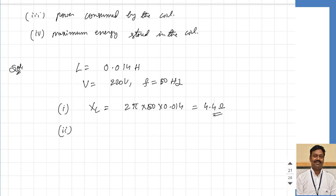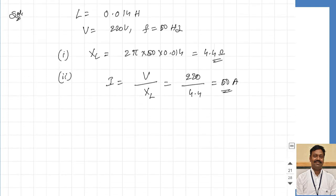For the second part, the current flowing through the reactor equals the RMS voltage divided by the inductive reactance. This is 220 divided by 4.4, which equals 50 amperes.